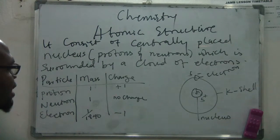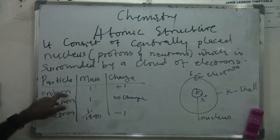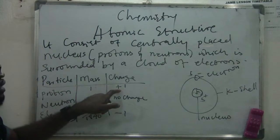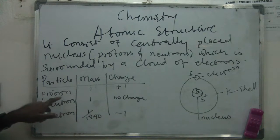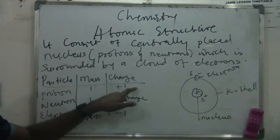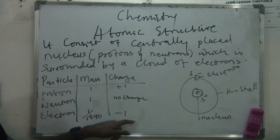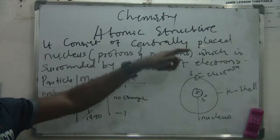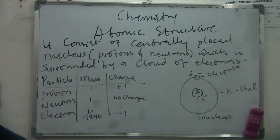The atom has equal numbers of electrons and protons. If the atomic number is 20, the protons will have a charge of plus 20 and the electrons will have a charge of minus 20. Minus 20 cancels plus 20, making the atom neutral.